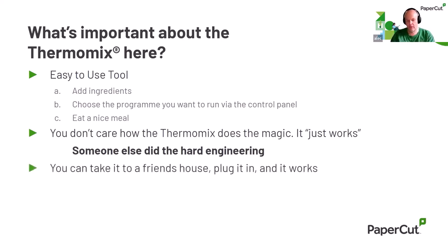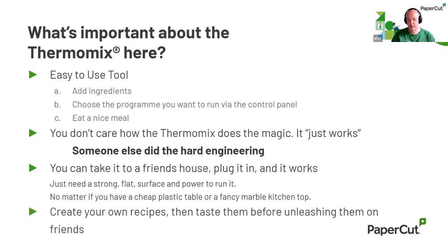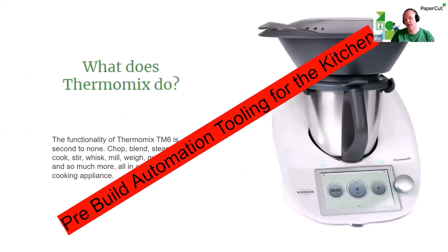You can take your Thermomix to a friend's house and do exactly the same thing — all you need is a flat surface to put it on and power to run it. It doesn't matter whether you've got a cheap plastic table or an expensive remodeled kitchen with a marble top — it'll work exactly the same way. It doesn't matter the platform on which you run it. You can also create your own recipes and taste them before unleashing them on your friends — so it's got this concept of preview. You're using the same machine not only to create meals to give to people, but also to try out changes to recipes. I would call the Thermomix pre-built automation tooling for the kitchen.